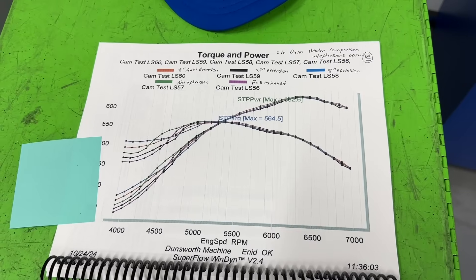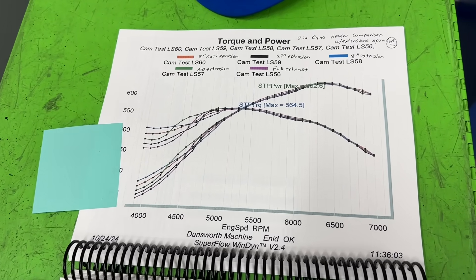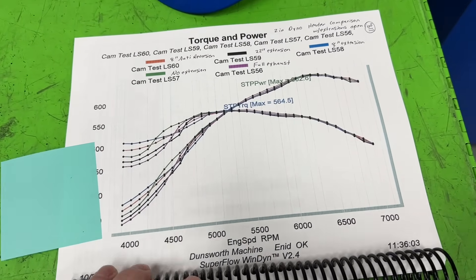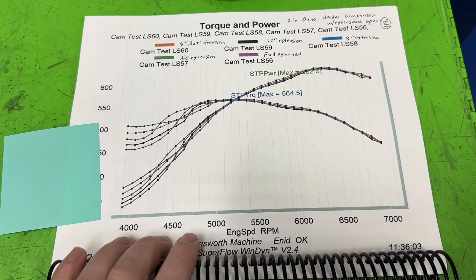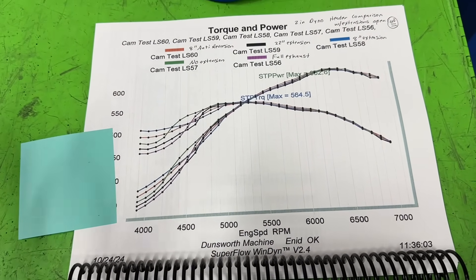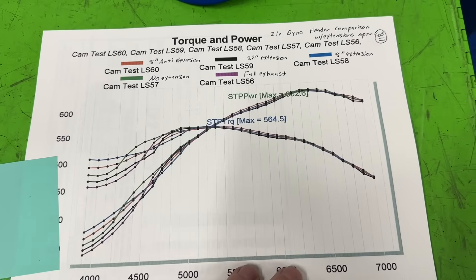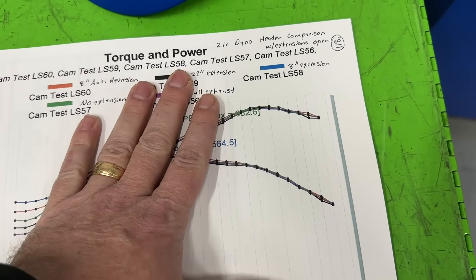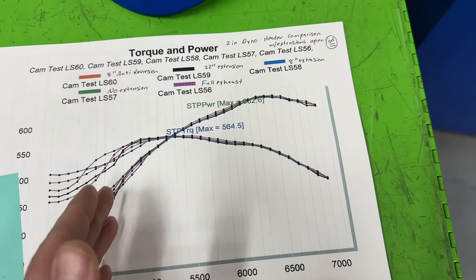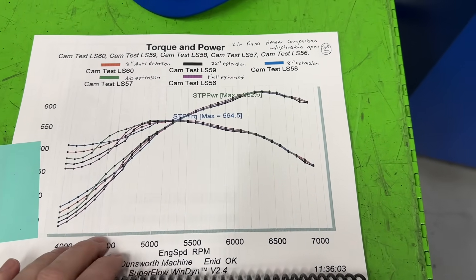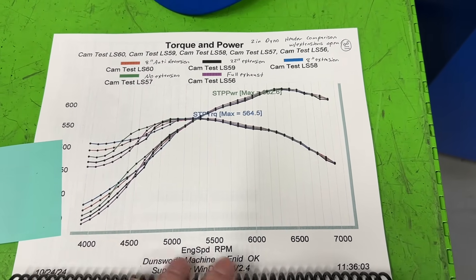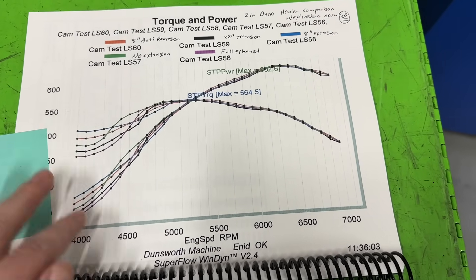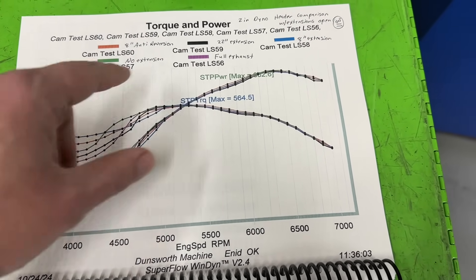So hopefully that gave you some insight into some header testing and especially with the extensions. I should point this out too though, this is only one combination. So what I have not tested, but I'm sure I will because I never stop testing unless I go broke, which who knows when that'll happen, it gets closer by the day. But what I haven't tested so far, the LS right now, this had the Pro Maxx large bore 245 heads on it right now.